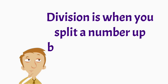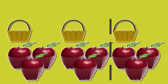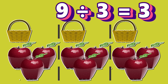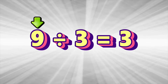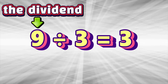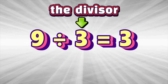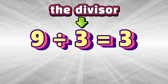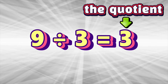Division is when you split a number up by a certain number. Say someone picks nine apples and wants to split them up equally into three baskets. Nine divided by three equals three. There would be three apples in each basket. This number nine — the total number of apples — is called the dividend. This number three is the divisor — the number of groups you are splitting the dividend into. And this three is the quotient — the answer to a division problem.